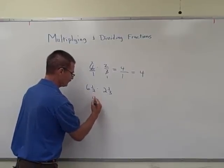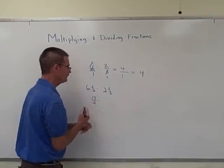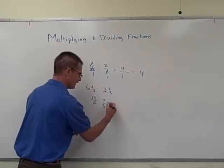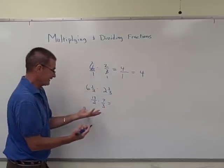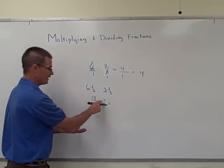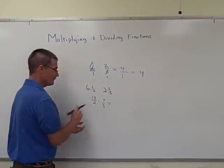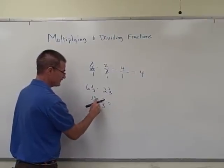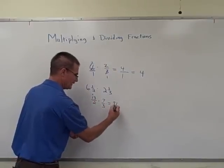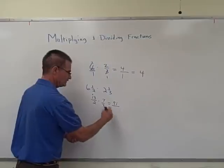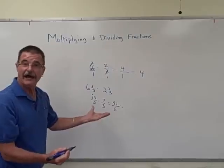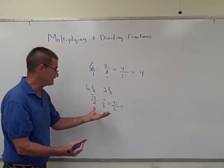But now let's convert most of these mixed numbers into impropers. So 2 times 6 is 12, plus 1 is 13 over 2. 3 times 2 is 6 plus 1, which is 7 over 3. And now I can see that I don't really have anything that's going to cross-cancel. 13 and 3 have nothing in common, 7 and 2. So I'm just going to multiply straight across. 7 times 3 is 21, carry the 2, 7, 8, 9. So that's 91. And 2 times 3 is now 6.